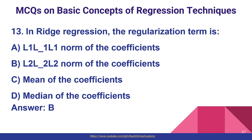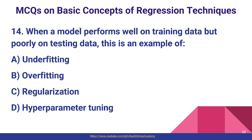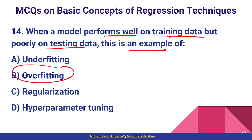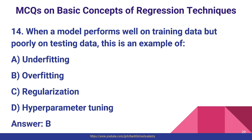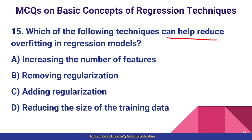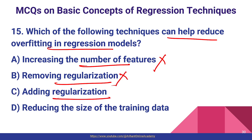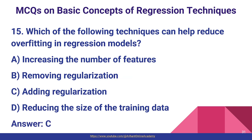Question number fourteen: when a model performs well on training data but poorly on testing data, this is an example of overfitting — option B is the correct answer. Question number fifteen: which technique can help reduce overfitting in regression models? Increasing features — no. Removing regularization — no. Adding regularization — yes. Reducing training data size — no. Adding regularization is used to reduce overfitting, so option C is the correct answer.